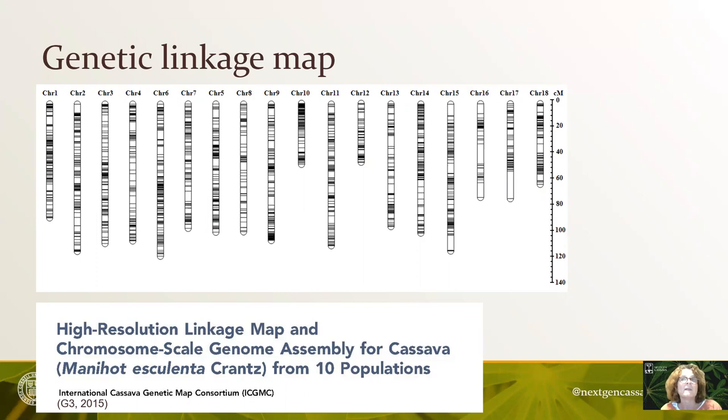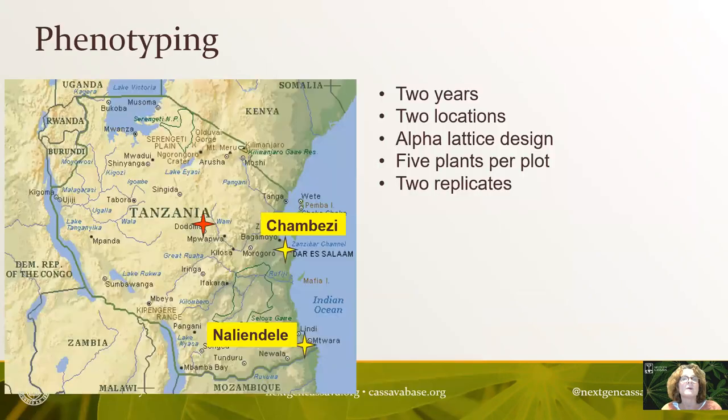These populations actually formed the basis of the consensus map and led to the first chromosome-scale genome assembly for cassava, published by the International Cassava Genetic Map Consortium in 2015.